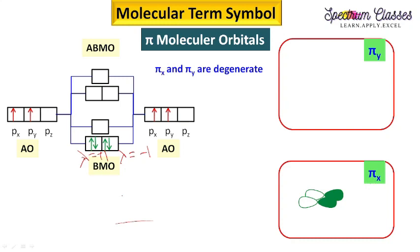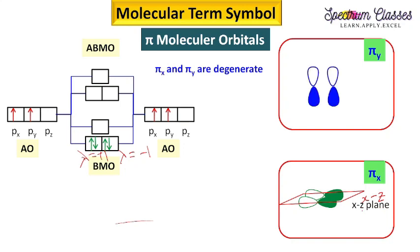These two orientations are also degenerate. If we have the π_x orbital, it lies along the internuclear axis in the xz plane. This plane is termed the xz plane.